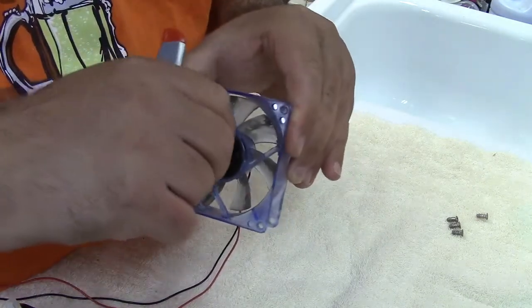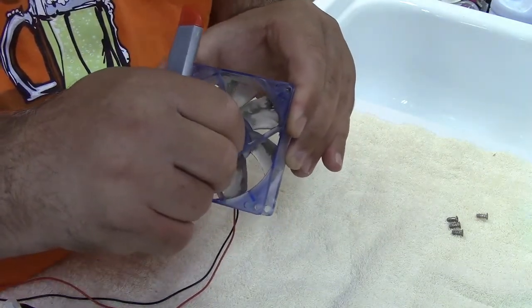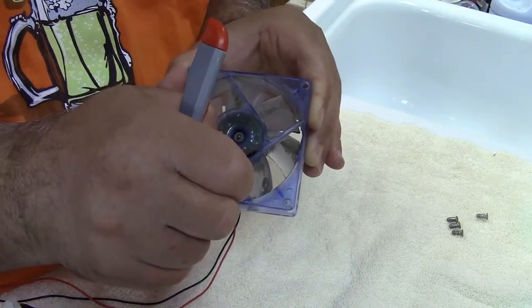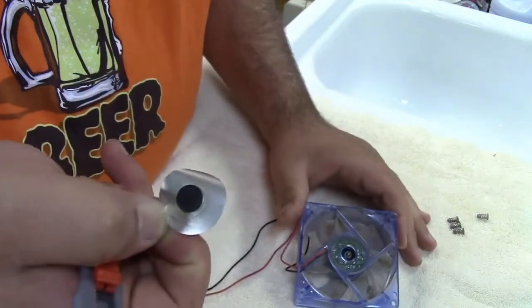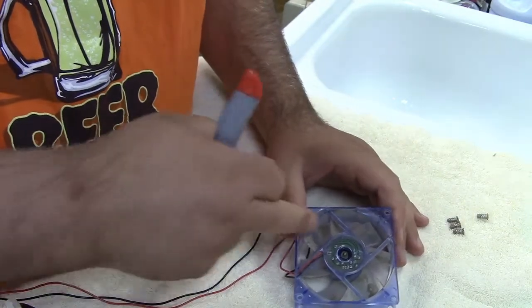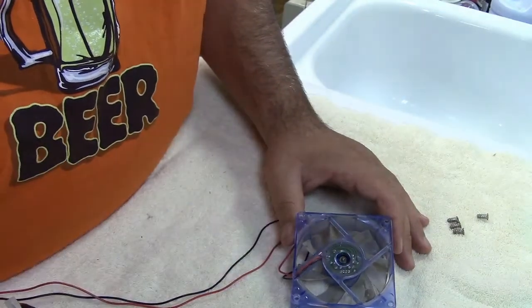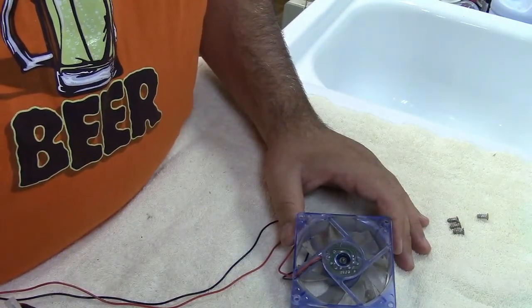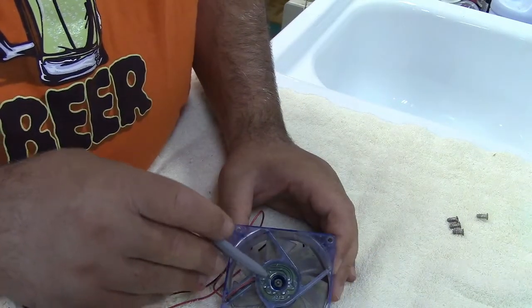Now this one had a rubber plug. Some may have another sticker over it or some other thing to prevent entry into the area that we're interested in, which is right here. Usually a utility knife will take care of that.